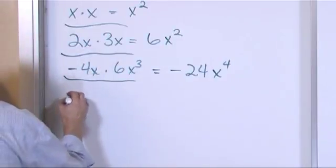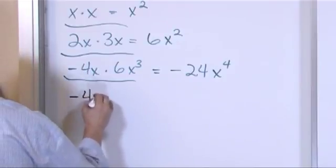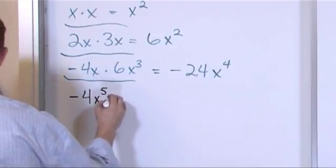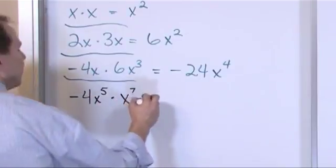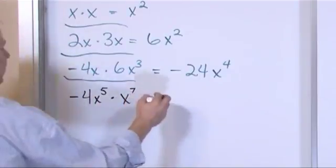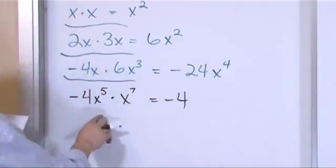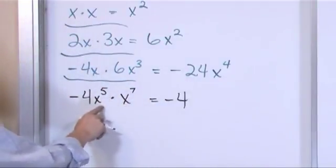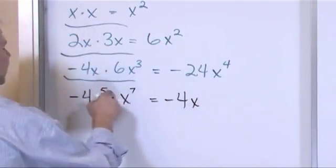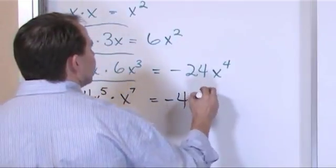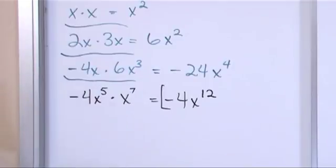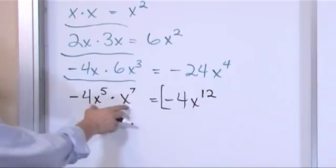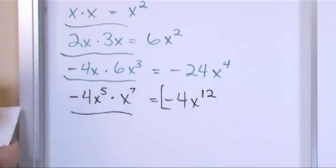Let's keep going. Negative 4x to the fifth times x to the seventh. We multiply the numbers: four times one gives us four. We have exponents with the same base, so we multiply by adding the exponents: seven plus five is twelve. The answer is negative 4x to the twelfth power. Multiply the numbers, multiply everything else — if you have exponents with the same base, add those exponents together.